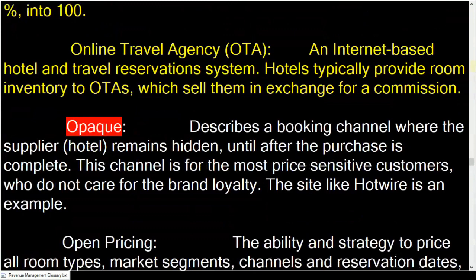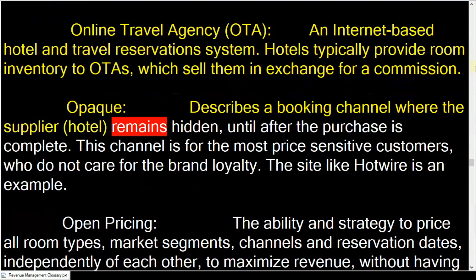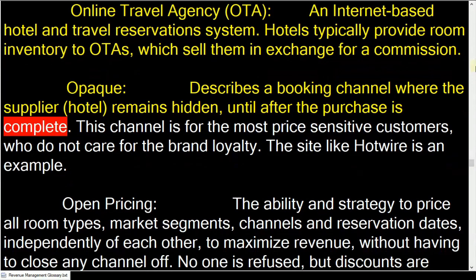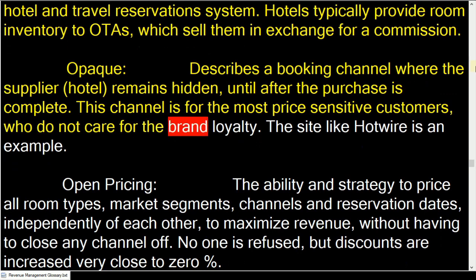Opaque: describes a booking channel where the supplier remains hidden until after the purchase is complete. This channel is for the most price-sensitive customers who do not care for brand loyalty. A site like Hotwire is an example.